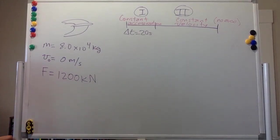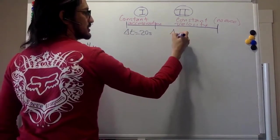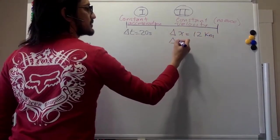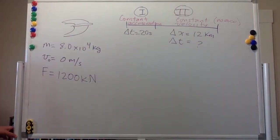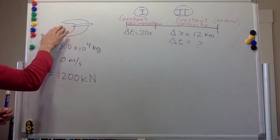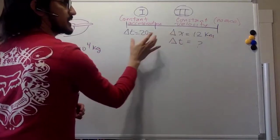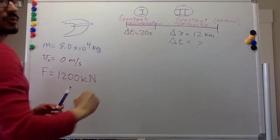And we know that we're told in the problem that it's going to be 12 kilometers, and we have to find the time that it's going to take the spaceship to go through those 12 kilometers after the thrusters were on for 20 seconds.